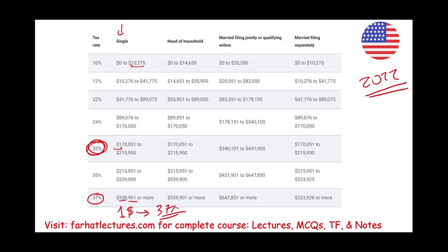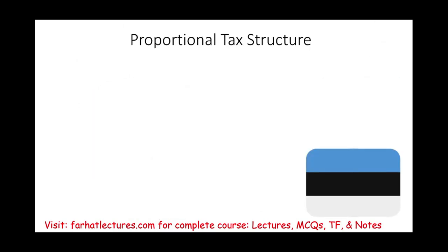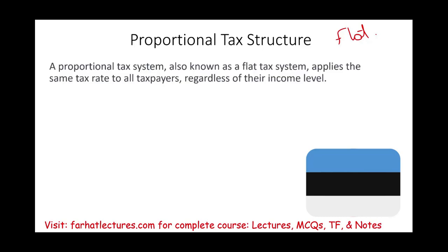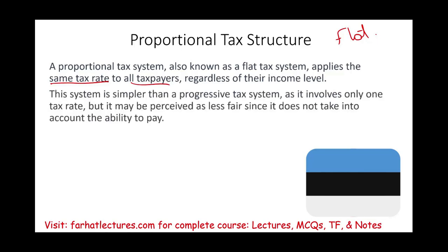So this is what we mean by a progressive tax structure: the more you make, the more you pay. Now we also have a proportional tax structure, also called a flat tax. It applies the same tax rate to all taxpayers regardless of income level — it doesn't matter how much money you make, you pay the same percentage. This system is simpler than a progressive system: just take how much money you make and multiply it by a percentage.